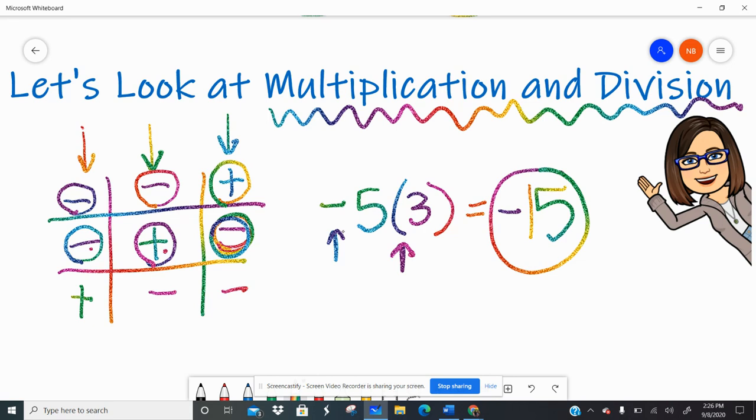Let's say I have negative 6 times negative 6. So I ignore the signs. 6 times 6 is 36. And I have a negative and a negative. So I go to my board, a negative times a negative is a positive.